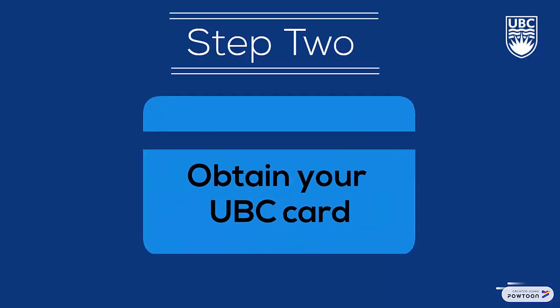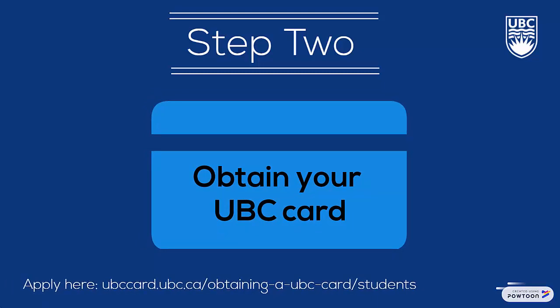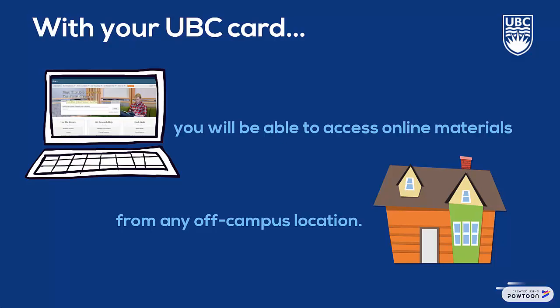Step 2: Obtain your UBC card. Your UBC student card doubles as your library card, and before using any of the library's materials, you need to apply for your card online. If you live locally, after applying for your card, you can pick it up at UBC's carding office. If you do not live locally, your card's barcode and PIN number will be emailed to you and you can use these numbers to access all of the library's borrowing services. This includes accessing online materials like ebooks, journal articles, and databases from any off-campus location.